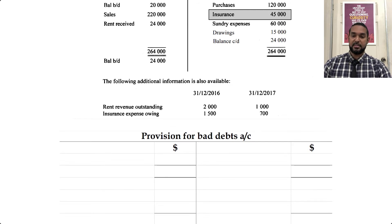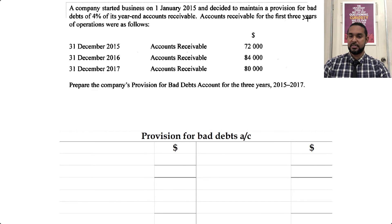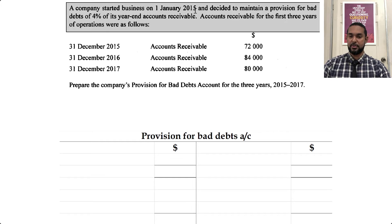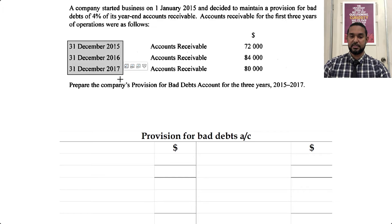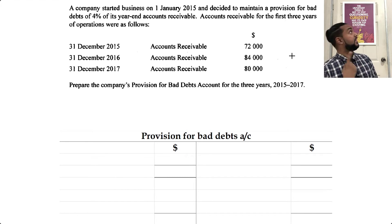Now the last thing in the question is the provision for bad debts account. It says a company started business on 1st January 2015 and decided to maintain a provision for bad debts of 4% of its year-end accounts receivable. Accounts receivable for the first three years of operation: 2015, 2016, and 2017, with balances of 72, 84, and 80 thousand. If you're rusty or don't know how to do the provision for bad debts account, I'm going to put a card up there to my video on it and a link in the description below.